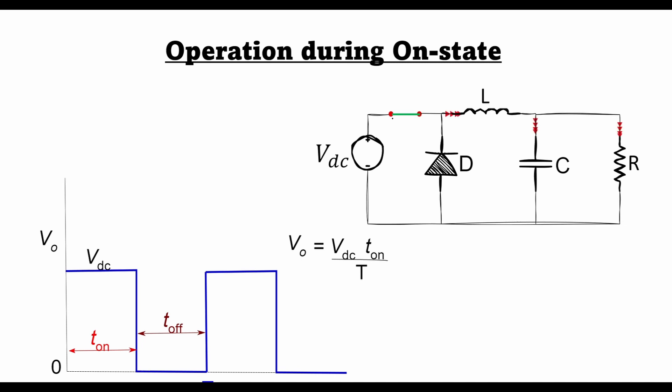When it is turned on, current starts to flow from the input towards the output as this diode is reverse biased. Thus the polarity across the inductor is VDC here because the supply appears here and this point is V0. Thus we can write that VDC minus V0 is equal to L times DI by DT.